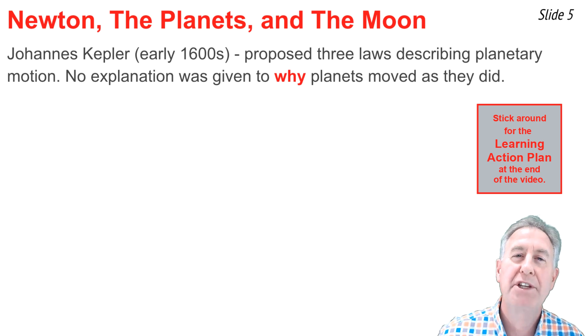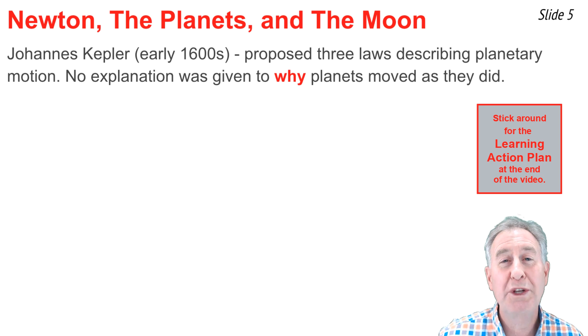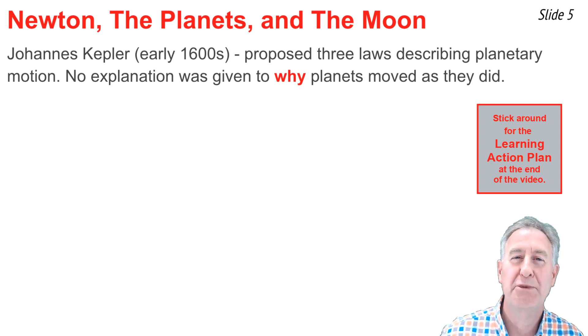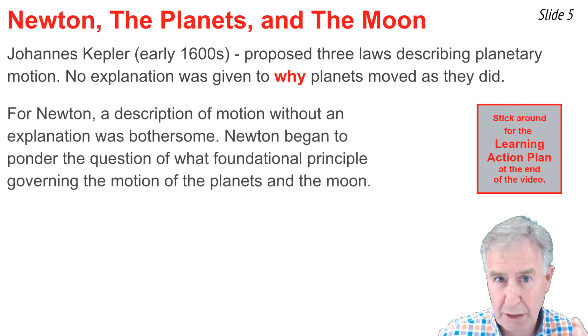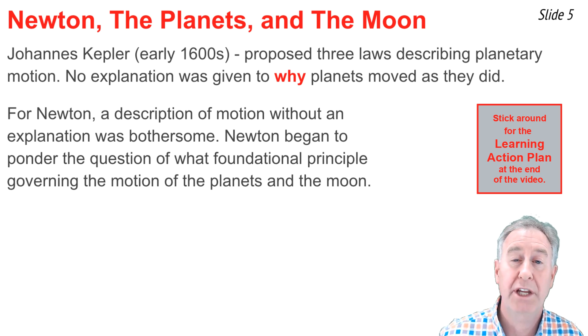In the early 1600s, mathematician Johannes Kepler derived the three laws of planetary motion. The laws were descriptive in nature, describing in detail how the planets moved about the sun. But they never offered any explanation for why the planets moved the way that they did. For Newton, the man of three laws, the idea of a description of motion without any explanation was indeed bothersome. And this sent him on a decades-long search for the underlying principles that explained the motion of planets orbiting the sun.